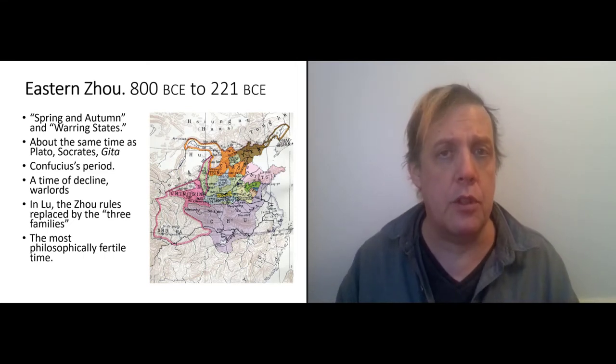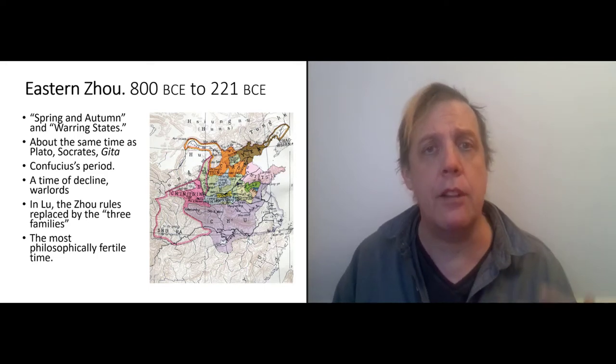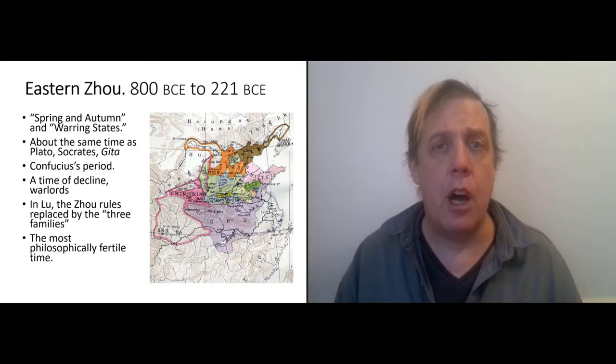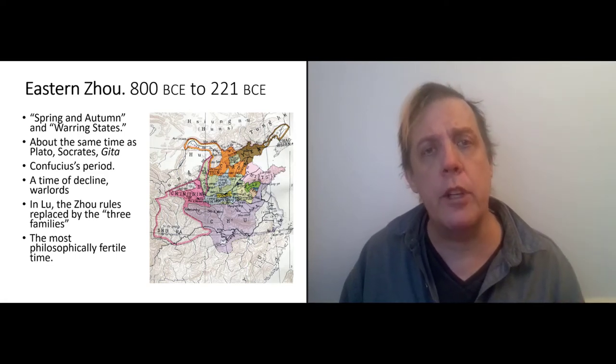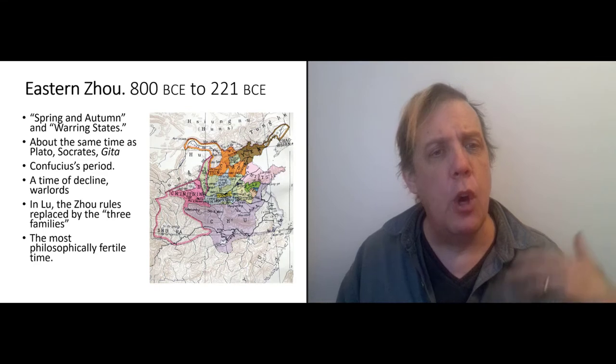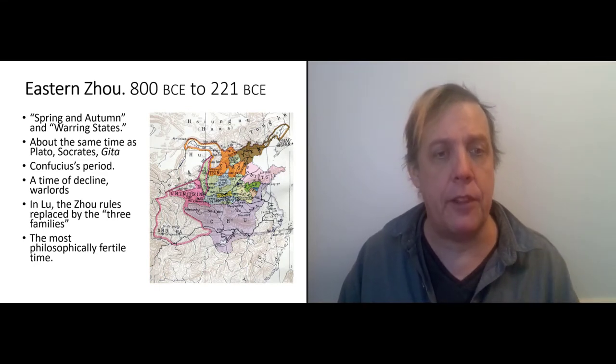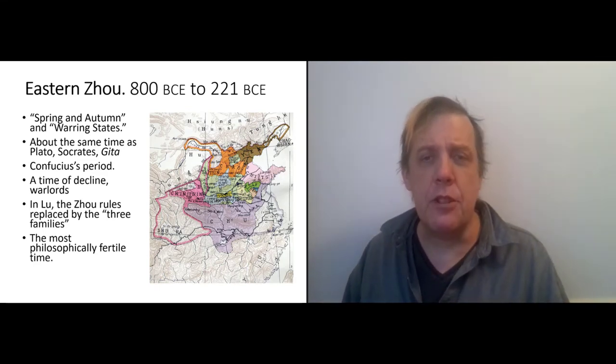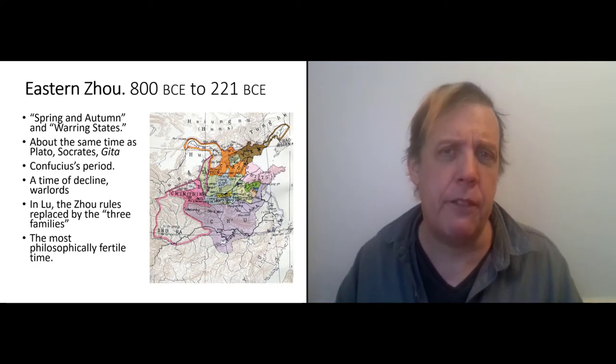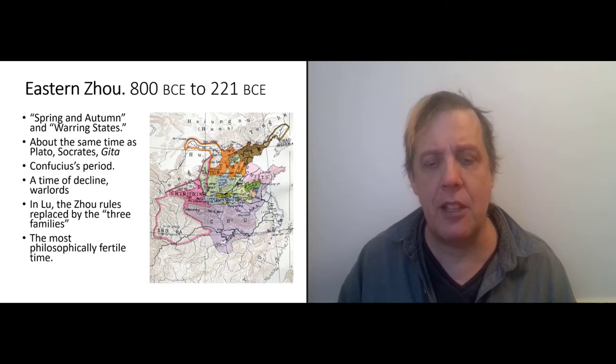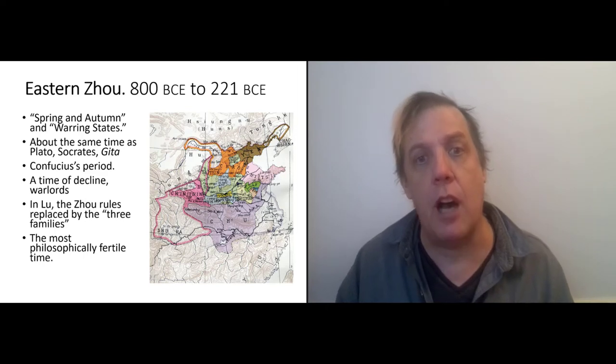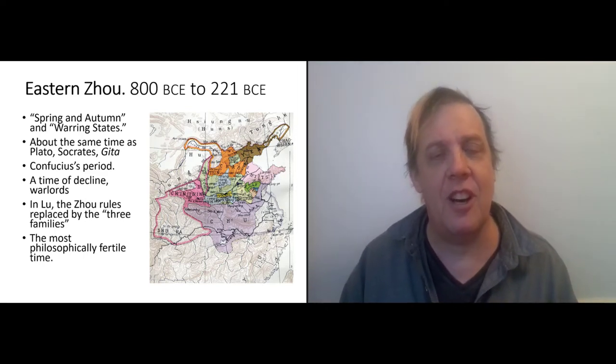But actually what was going on, all the real power lay with a group of gangsters called the three families. And you'll see references to the three periodically. And so this is one of the things that really makes Confucius sad and angry about the era that he lives in. The rightful rulers who practiced with nobility and the mandate of heaven are there, but they're just shells. And all the real power lies with warlords and gangsters.